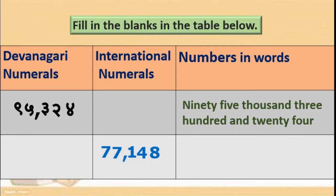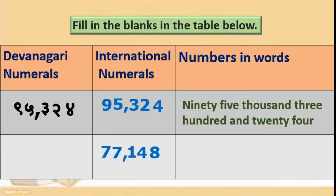See this. Now, the first one — we have to write the Devanagari numerals into international numerals. The first one is 9, 5, 3, 2, 4 — that means 95,324. Now we will write 9, 5, 3, 2, 4.